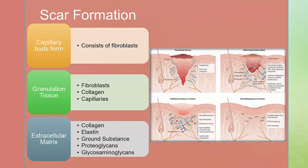Scar formation: capillary buds form and there is a formation of a delicate connective tissue called granulated tissue. This consists of fibroblasts that synthesize extracellular matrices and develop collagen, elastin, ground substance, prostaglandins, and glycosaminoglycans. The tensile strength will increase with the proliferation of collagen. There are 16 different types of collagen found in the body; the body contains 80 to 90% of types 1, 2, and 3 collagen. In a normal sequence, there is minimal scarring for the patient. If there is persistent inflammation, we have an extended fibroplasia and a scar is going to be more prominent.